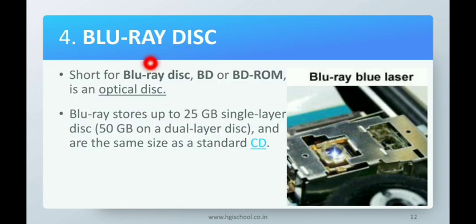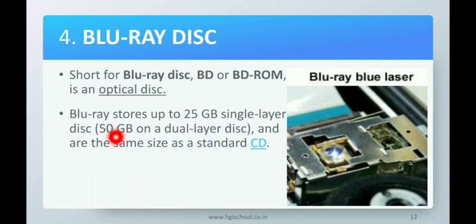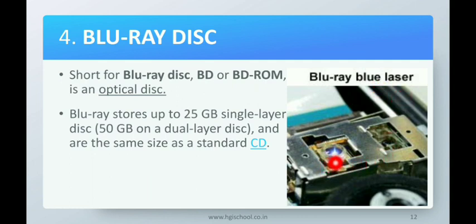Blu-ray Disk, also known as BD or BD-ROM, is an optical disc. It can store up to 25 GB on a single-layer disc and 50 GB on a dual-layer disc, and is the same size as a standard CD. It uses a blue laser light to read or write the Blu-ray disk.